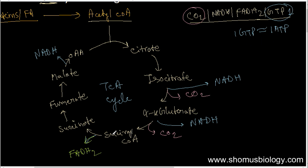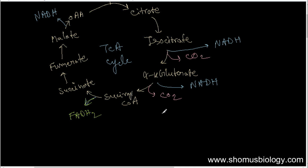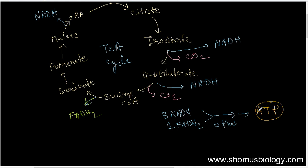The NADH and FADH2 need to go through oxidative phosphorylation to generate ATP. For a general calculation: one NADH gives approximately three ATPs, so three NADH gives nine ATPs. One FADH2 gives two ATPs, so nine plus two equals eleven ATPs, plus one GTP equivalent — giving approximately twelve ATP molecules overall per turn of the cycle.